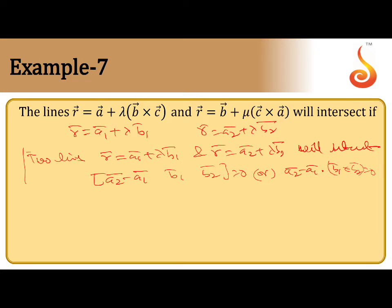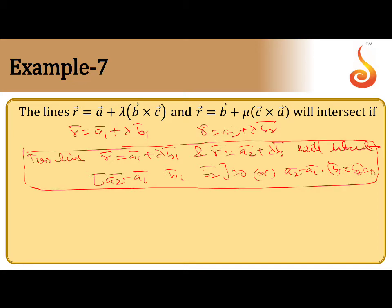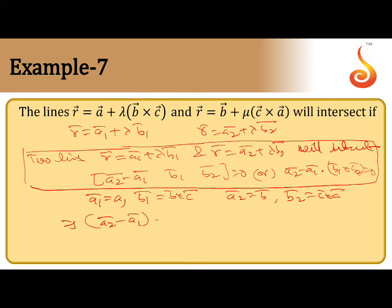So now let us identify a1, b1, a2, b2. Here a1 = a, b1 = b × a, a2 = b, and b2 = c × a. So let us apply the property: (a2 - a1) · (b1 × b2) = 0.